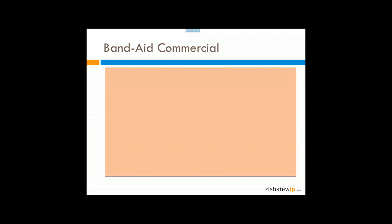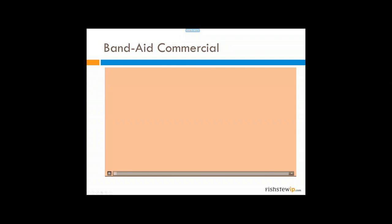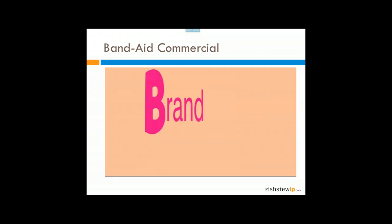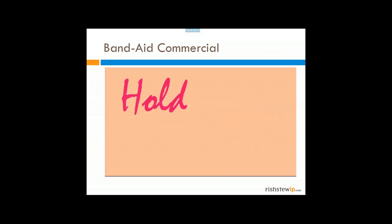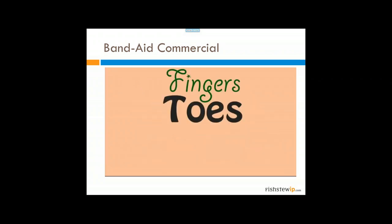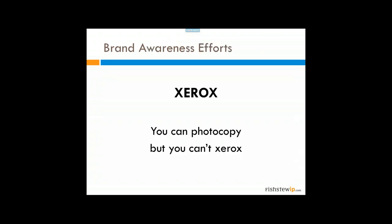Johnson & Johnson is a perfect example of avoiding genericide. They modified their commercial from 'I'm stuck on Band-Aids because Band-Aids are stuck on me' to 'I'm stuck on Band-Aid brand because Band-Aids are stuck on me.' This illustrates the effort to maintain brand distinctiveness. Similarly, Xerox ran ads saying you can photocopy but you cannot 'Xerox,' and referenced aspirin's lost trademark status with the line 'When you use Xerox the way you use aspirin, we get a headache.'